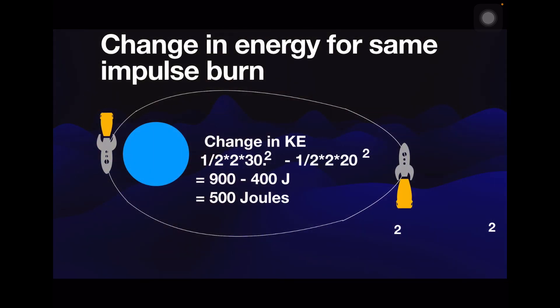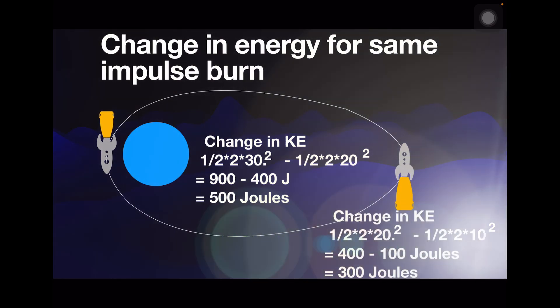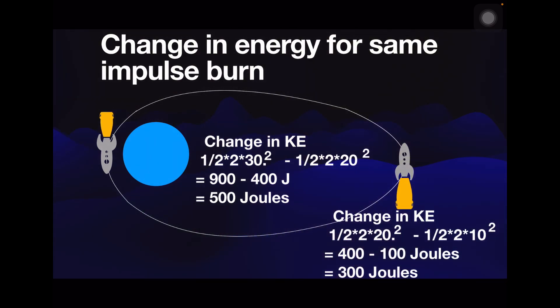Now let's look at change in kinetic energy. So at perigee, it goes from 20 to 30, so that ends up being 30 squared minus 20 squared, which is 500 joules. Look at apogee. For the same delta v, we end up with only 300 joules.